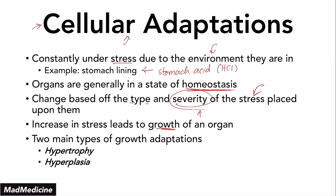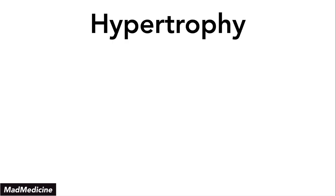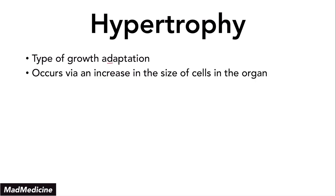Let's start talking now about hypertrophy and hyperplasia — both are high yield. Hypertrophy is a type of growth adaptation that occurs due to an increase in the size of the cells of an organ. That's very important to understand because this is one of the key differentiating factors between hypertrophy and hyperplasia. Hypertrophy just means that your cell is going to grow in size.